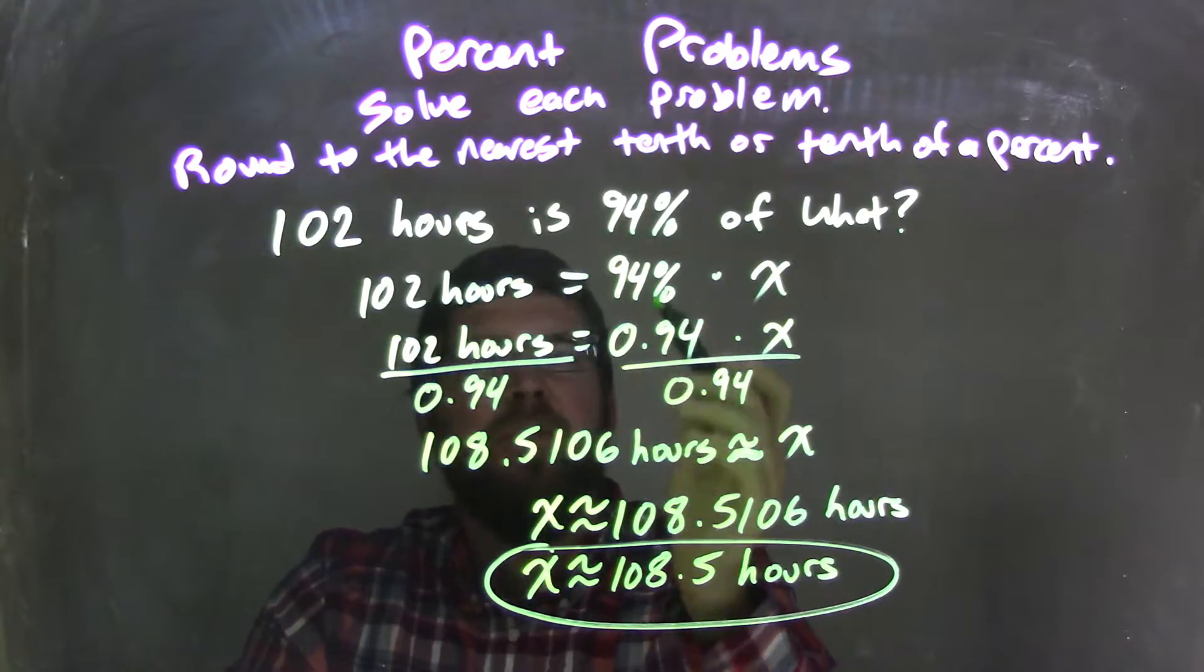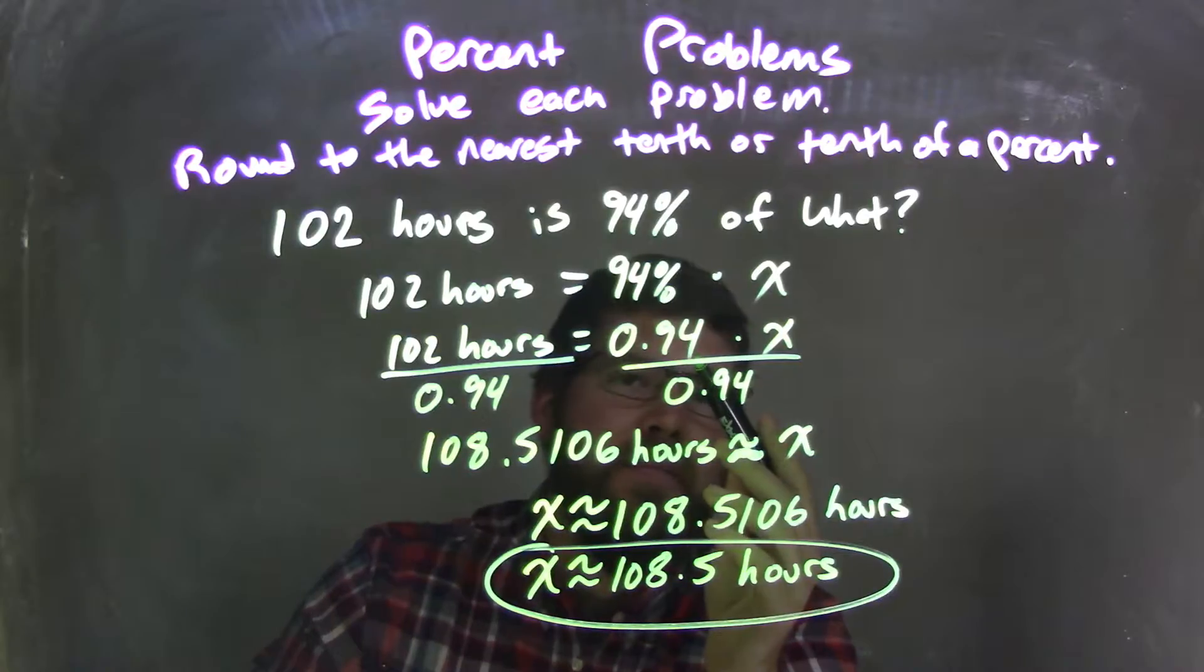I then convert the percent to a decimal. 94% equals 0.94.